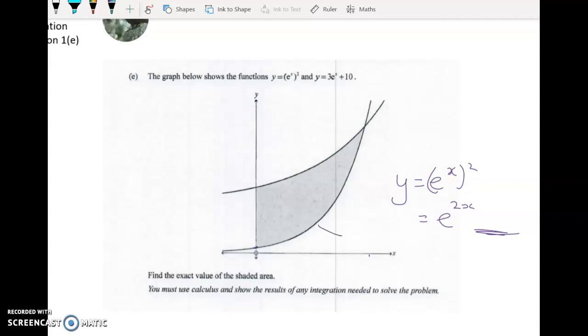So this function here is e to the 2x. And this function here is the other one, and you can see the y-intercept of 10 sitting there. So we've got y is equal to 3e to the x plus 10.